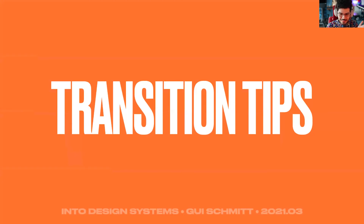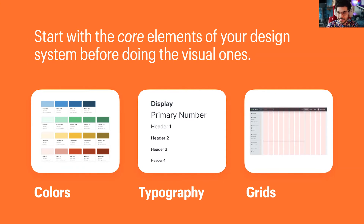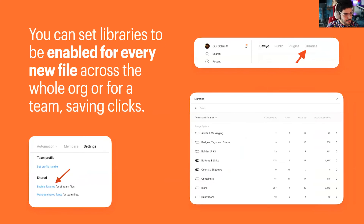I'd like to talk about some transition tips. You want to start with the core elements of your design system so that you can have everything properly linked. Start with your colors, typography, and grids, then start to build more visual stuff like buttons, because you want to make sure these are linked — if you want to make changes to any of these elements in the future, it's just one click away. You can also set certain libraries to be on by default on a team and organization basis, so that someone starting a new file already has colors and typography available.